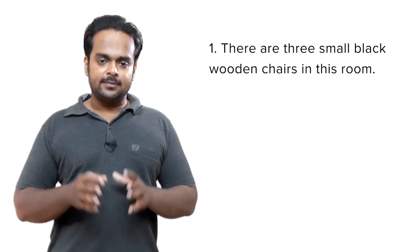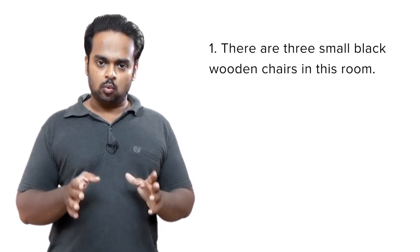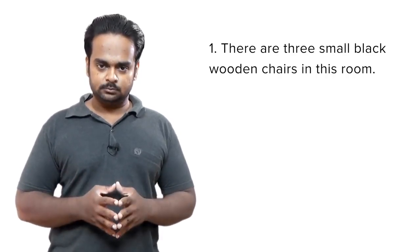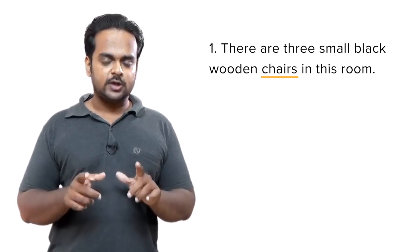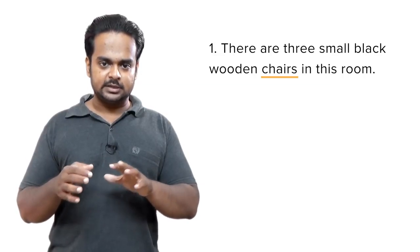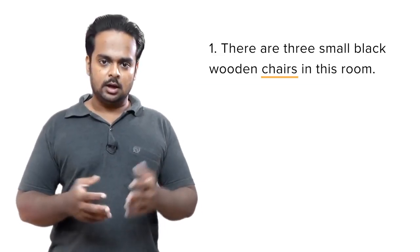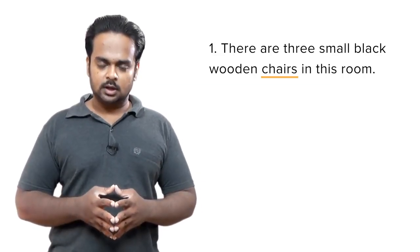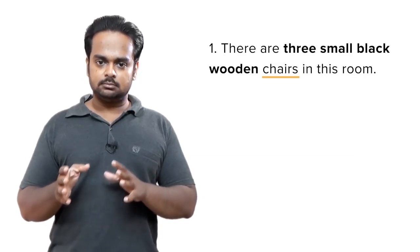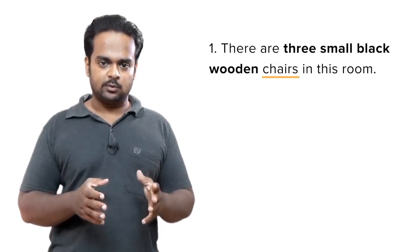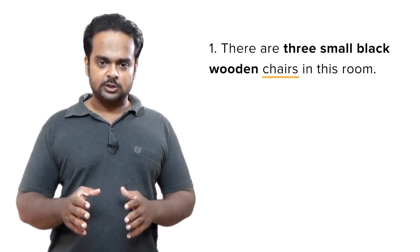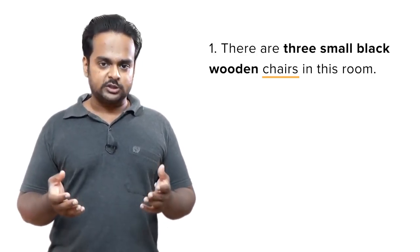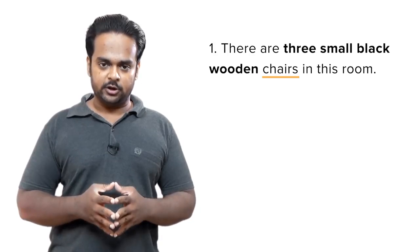For example, take a look at this sentence: there are three small black wooden chairs in this room. Focus on the noun 'chairs' — can you tell me which adjectives modify, that is, give more information about chairs? The adjectives are three, small, black, and wooden. These adjectives answer questions like how many, what size, what color, what material, etc.